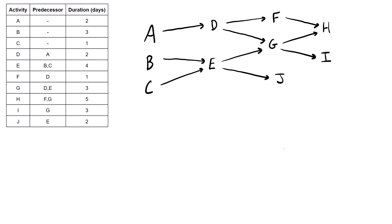Looking at the rough sketch, it's looking good — there are no unnecessary crossovers of our arrows. We can see that activities A, B, and C are all our initial activities with nothing before them, and activities H, I, and J are all the final or finishing activities with nothing that comes after them. That's pretty critical to pay attention to, as we'll need to figure out which one determines the late finish for all of them.